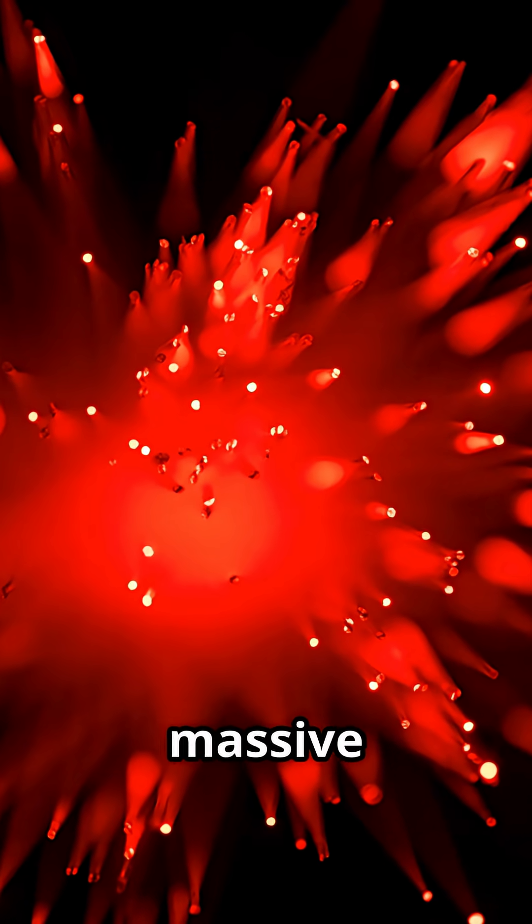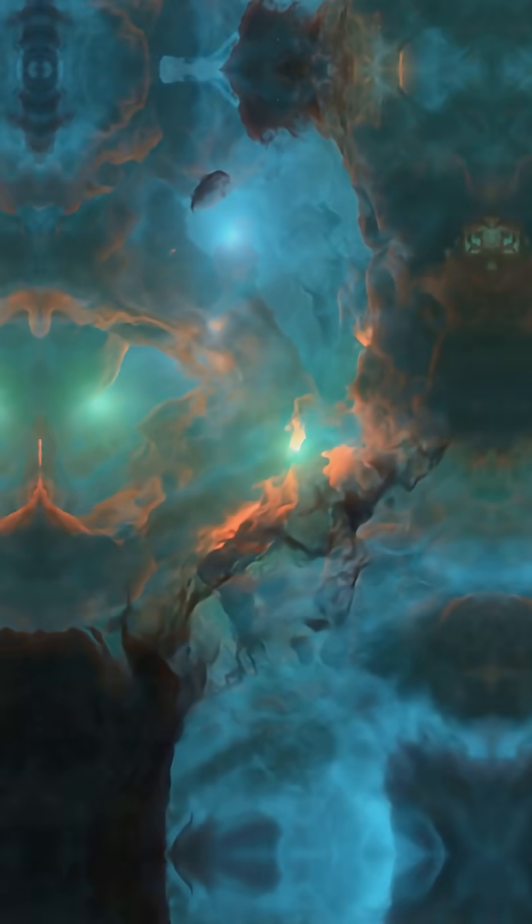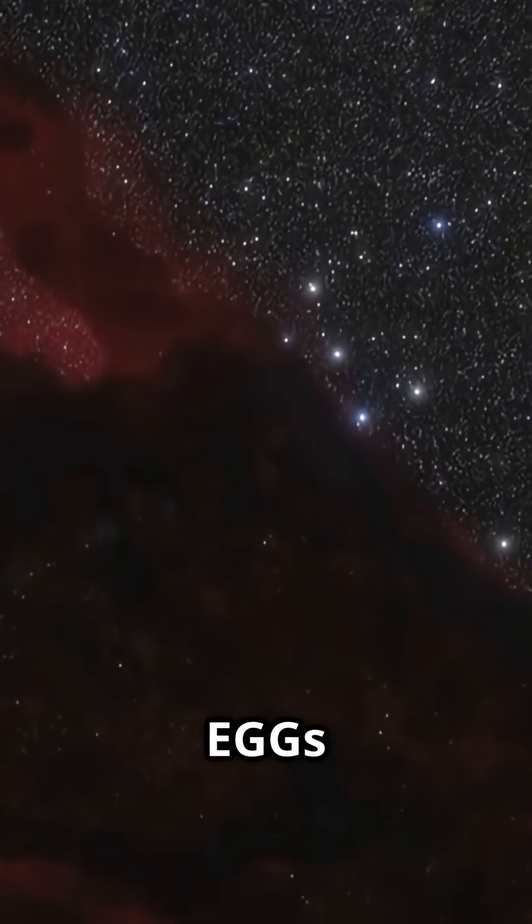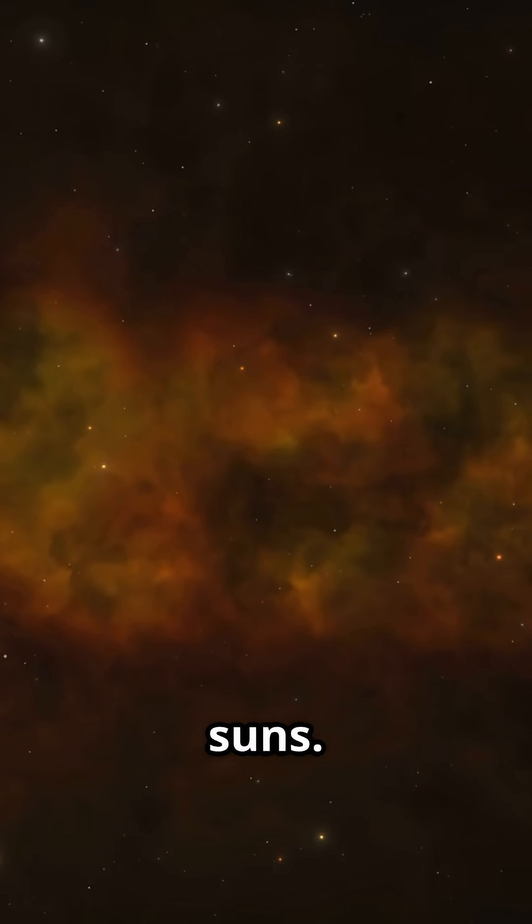Intense radiation from nearby massive stars is sculpting these towers, blasting them with ultraviolet light and slowly eroding them away. Inside dense clumps called EGGs, evaporating gaseous globules are the cradles of future suns.